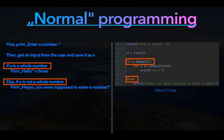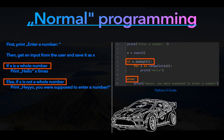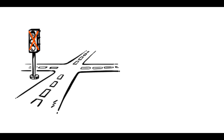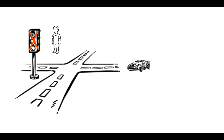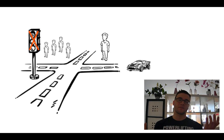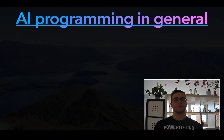Imagine you want to program a self-driving car and describe every situation it can get into using these if and else statements. Even at a single intersection — maybe with a defective traffic light — you could imagine hundreds of different situations. Doing this for all the millions of intersections in the world, that's impossible to manage. And this is where AI comes into play.